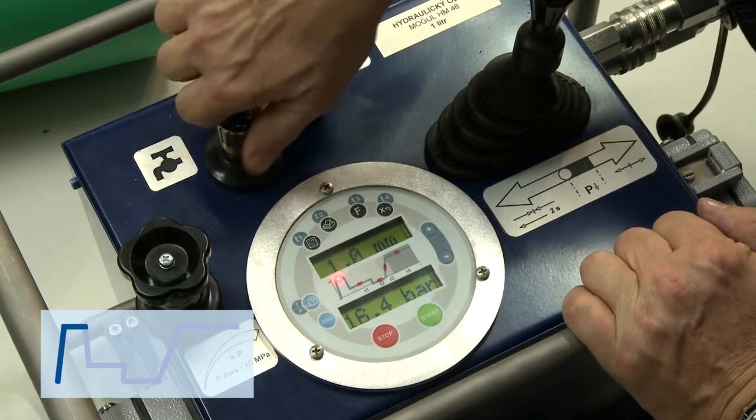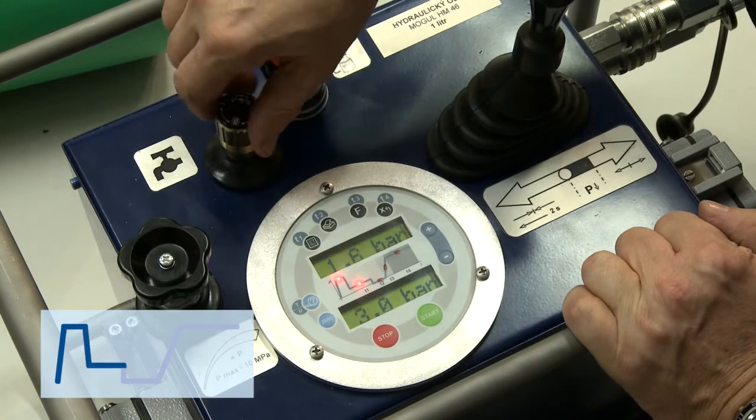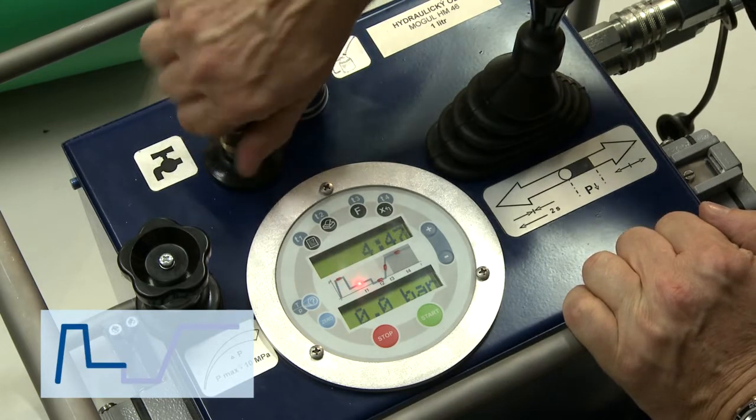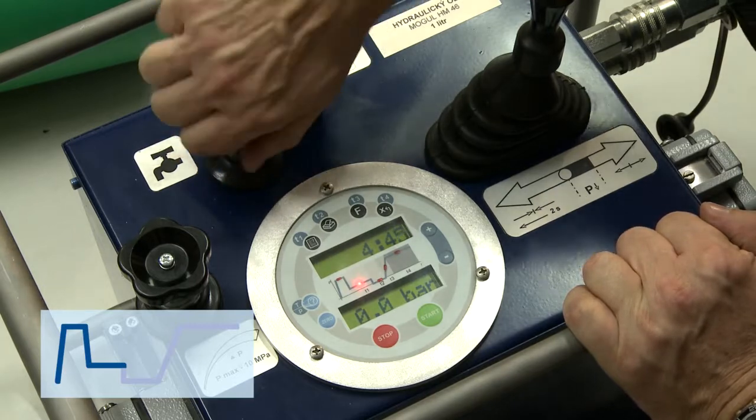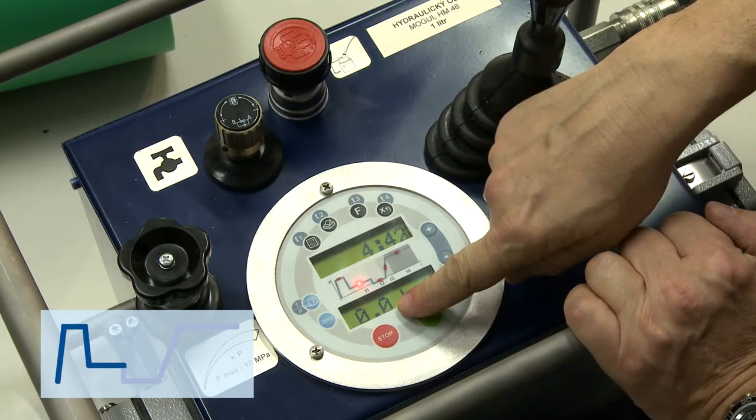When the weld flash has become sufficiently large, reduce the pressure to a minimum but make sure that both ends of the pipes still stay in contact with the heater. From this point you are counting the time required to heat up the welding layer.